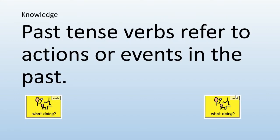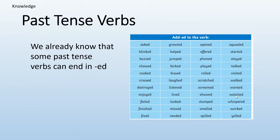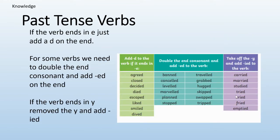As a reminder, past tense verbs refer to actions or events in the past. We already know that some past tense verbs can end in -ed, like the ones on the screen. If the verb ends in e, we just add a d at the end. For some verbs, we need to double the end consonant and add -ed. And if the verb ends in y, remove the y and add -ied. All of these ones are called regular past tense verbs.